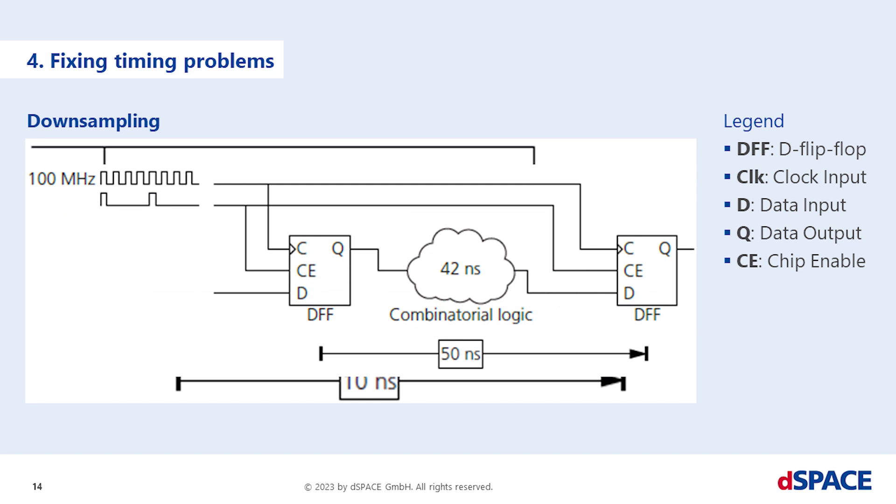Alternatively, you can down-sample the clock frequency by multi-cycle paths if the time resolution is not critical. The following illustration shows the usual mechanism of down-sample paths. As an example, the combinatorial logic has a latency of 42 ns. The signal path is down-sampled from 100 MHz to 20 MHz. You can do this for example by adding a Xilinx down-sample block at the beginning of a path and an up-sample block at the end. The added Xilinx blocks are based on D flip-flops.